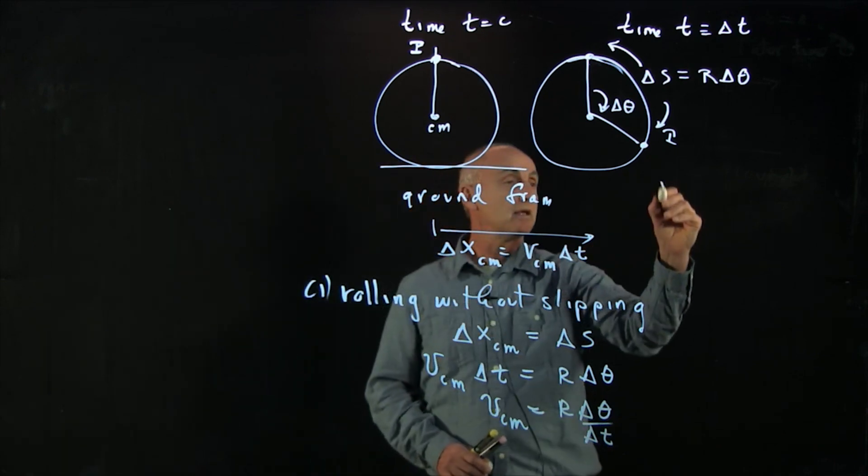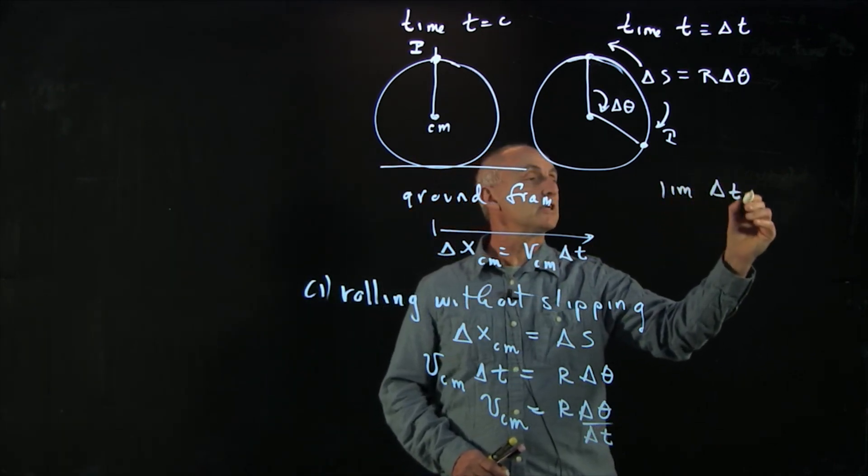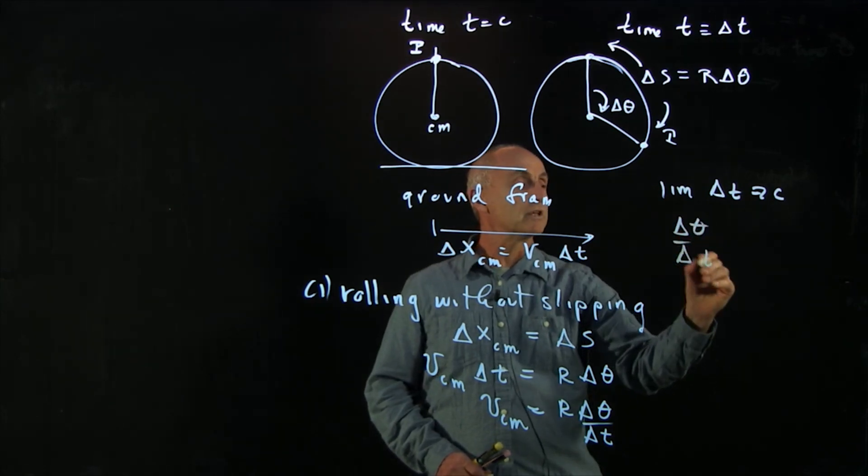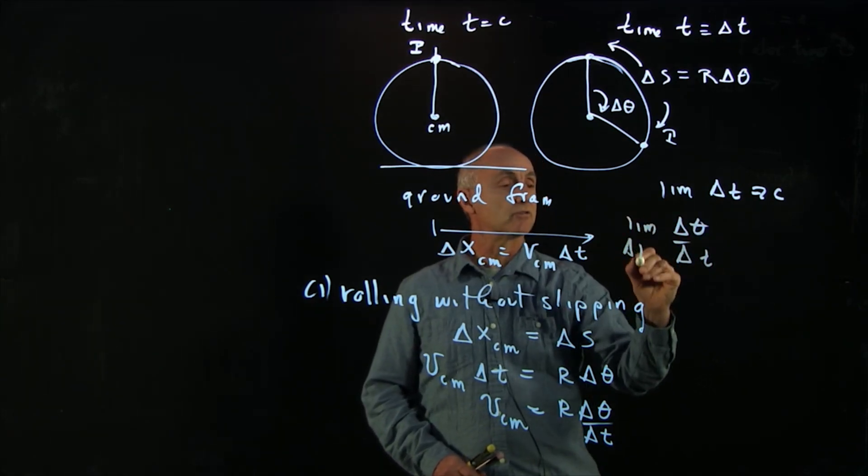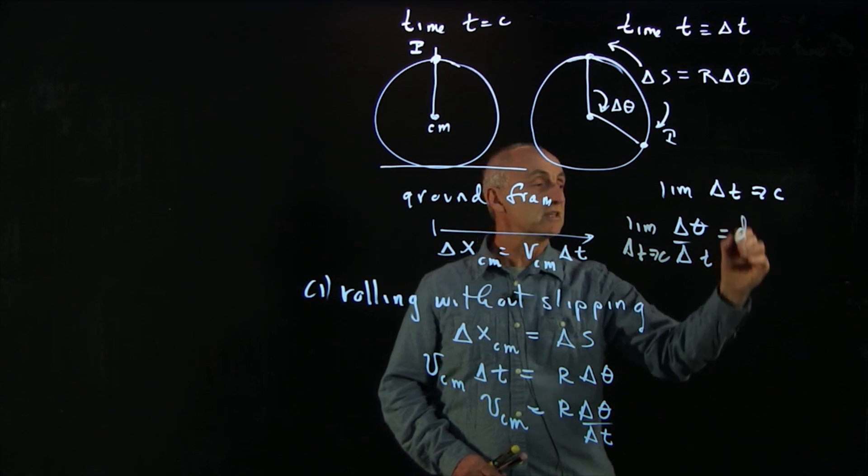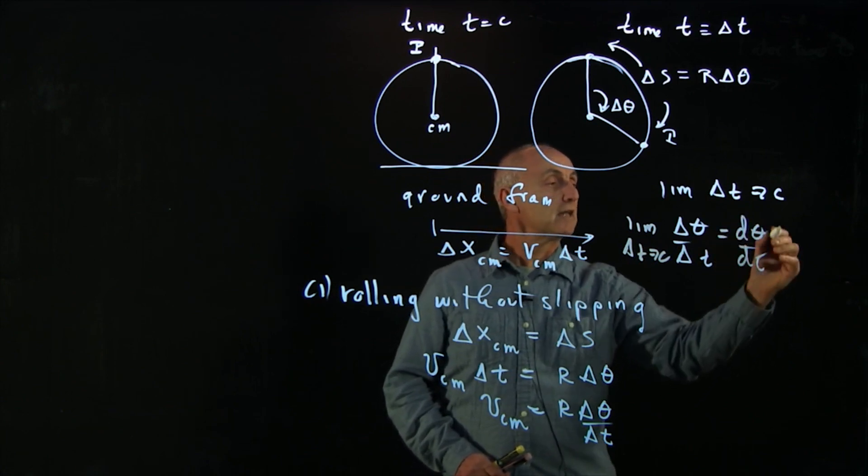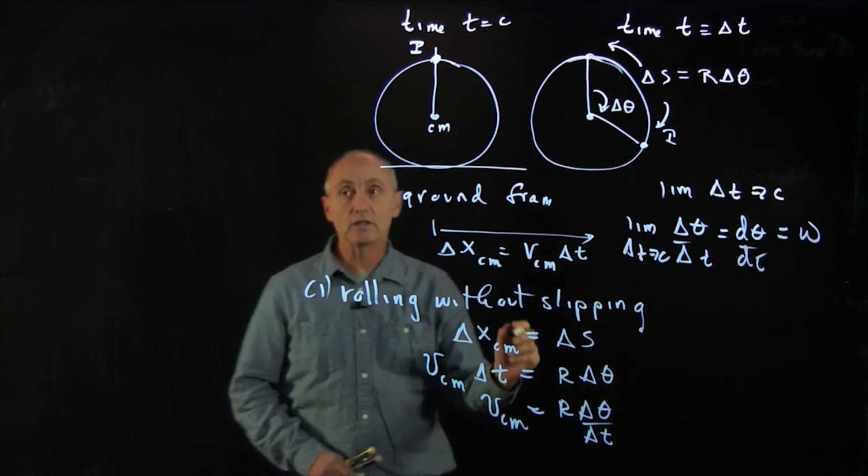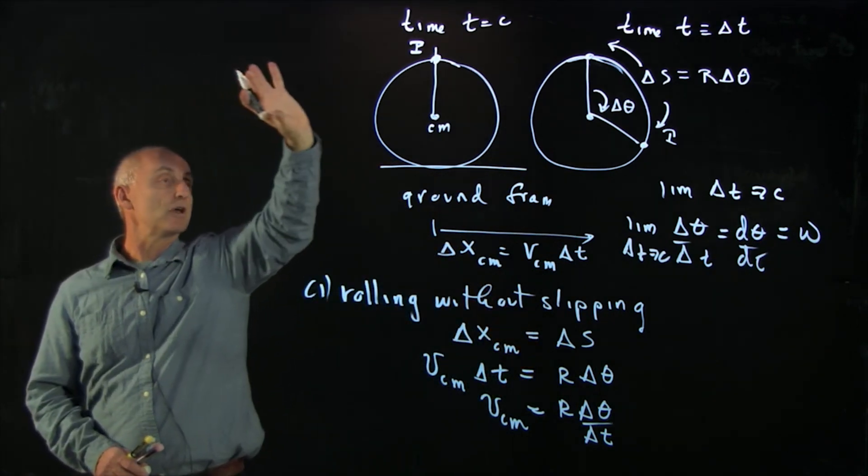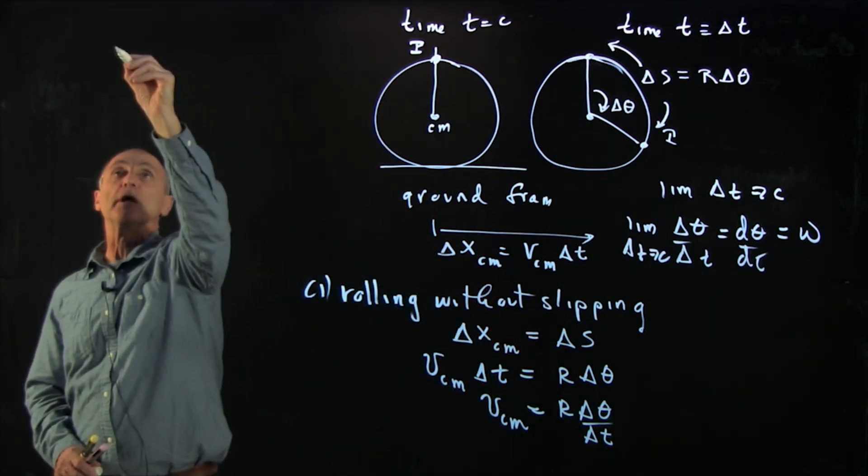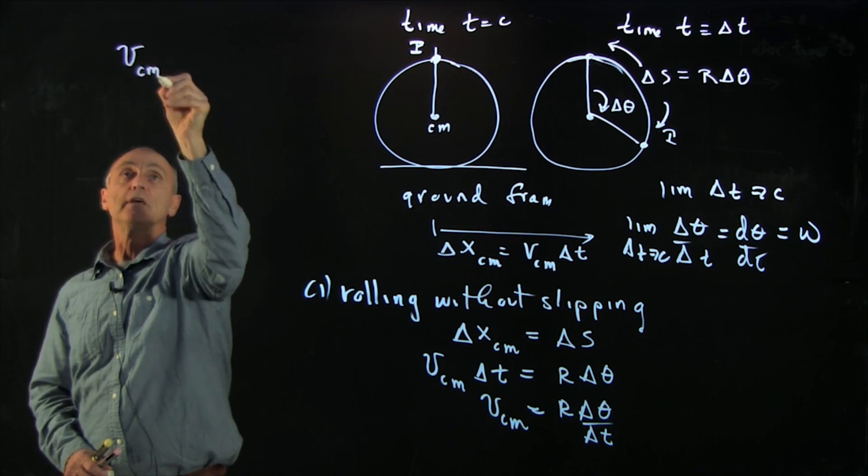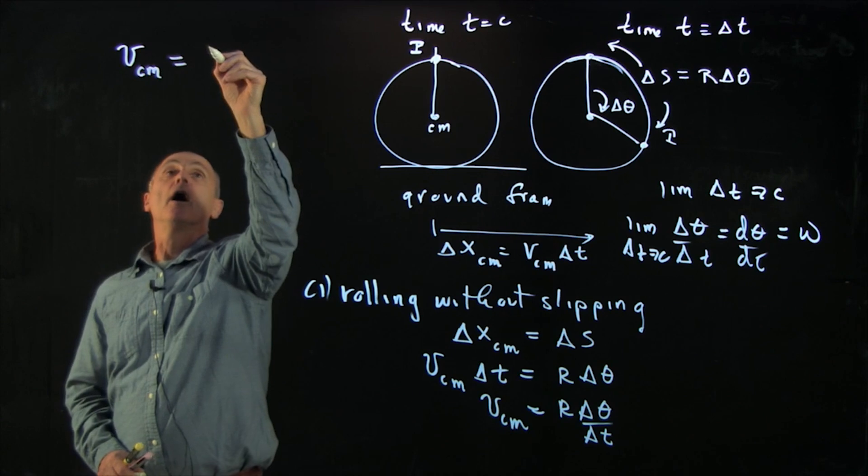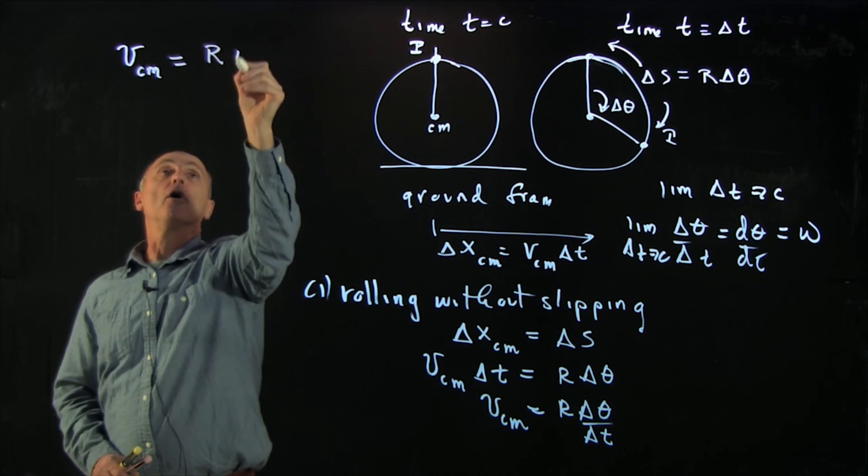Now in the limit as delta t goes to 0, we have that delta theta over delta t in this limit as delta t goes to 0 is d theta dt. And that's what we called the angular speed. So in our limit, as this wheel is rolling without slipping, we have the condition that the velocity v cm equals r omega.